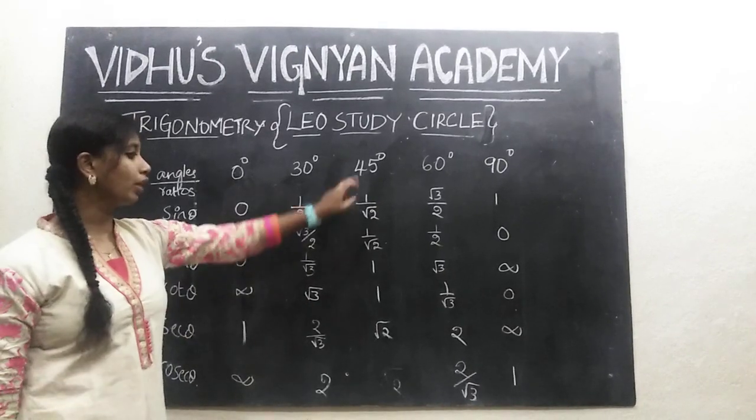Today we will be dealing with cot theta. It's the same - don't get confused. For cos we reversed sine, same for cot you reverse tan. So cot 0° is infinity, cot 30° is root 3, cot 45° is 1, cot 60° is 1 by root 3, and cot 90° is 0. You can also write cot theta as cos theta by sin theta.